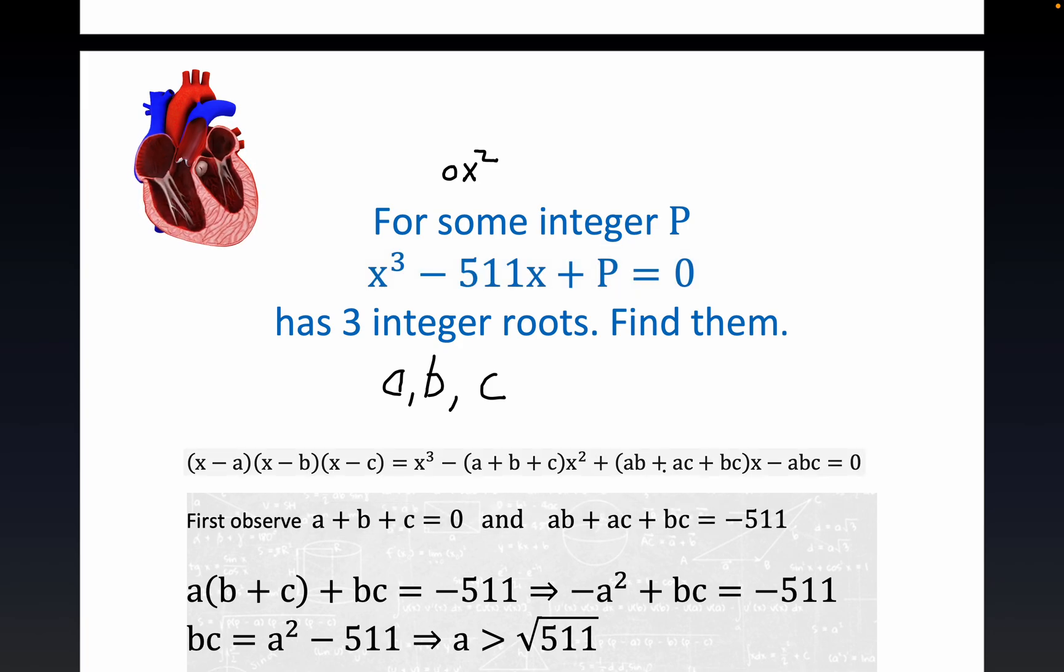Alright, now also if you expand all this out, you get all the products of the pairs as the coefficient of x. That means we know that ab plus ac plus bc is equal to the only number in sight which is negative 511.